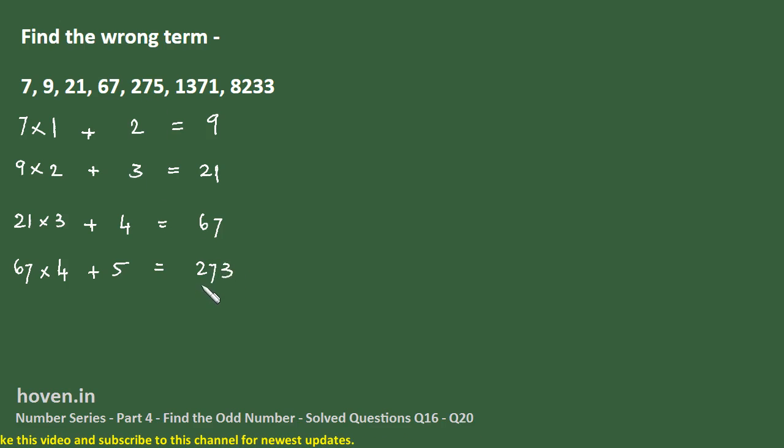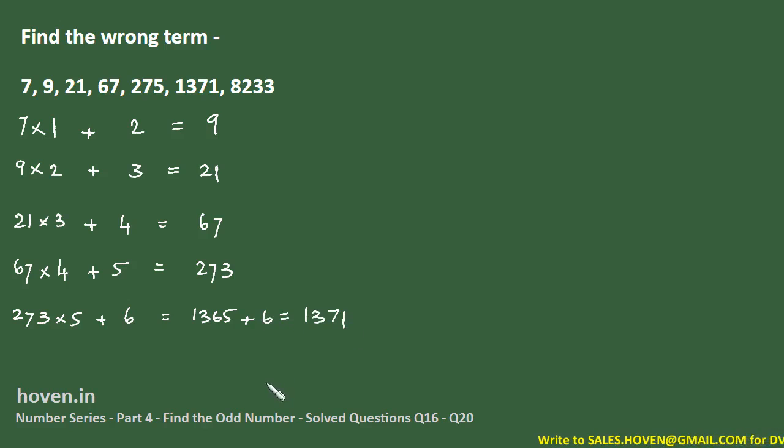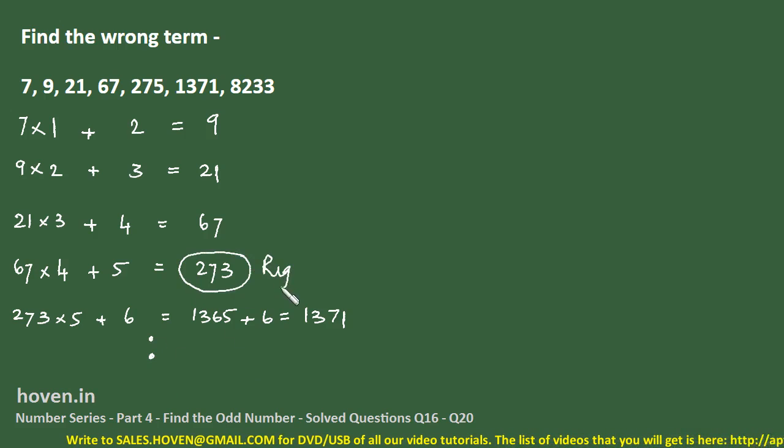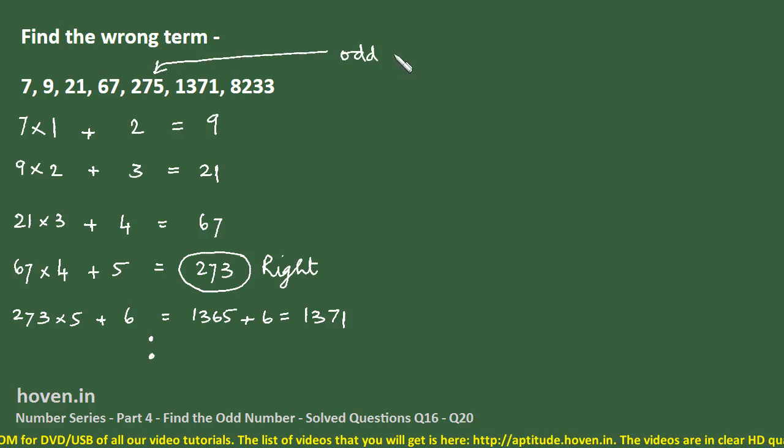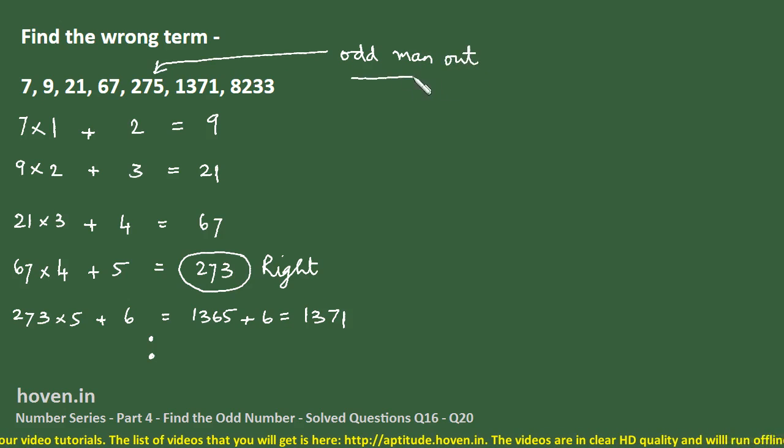So 275 should be wrong. But let us verify it further because that will be more important. 273 into 5 plus 6, what does it give? 1365 plus 6 equal to 1371. Now so much can't be a coincidence, therefore we do not have to check any further. So we will say that this is right, and this 275 is the odd man out. So this was a simple rule in this case that was working. Let us move to the next question now.